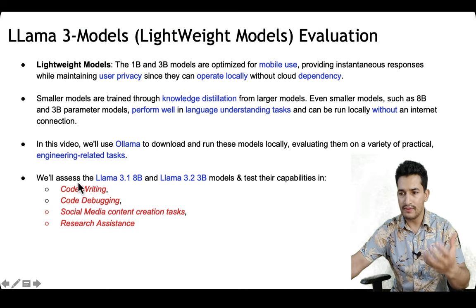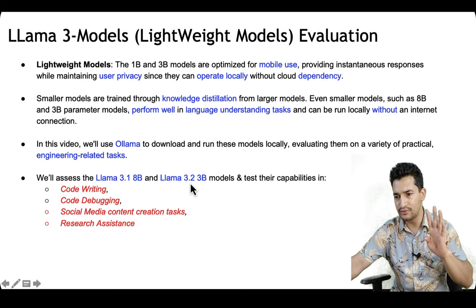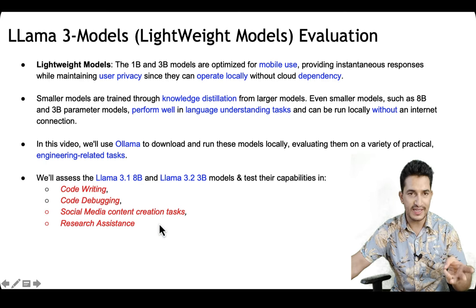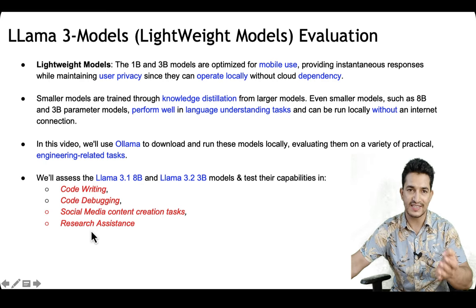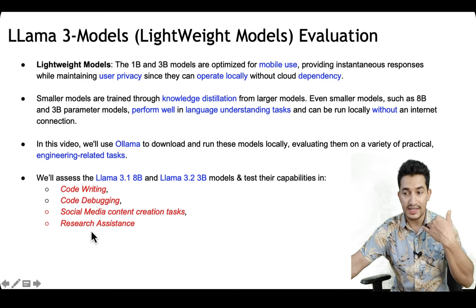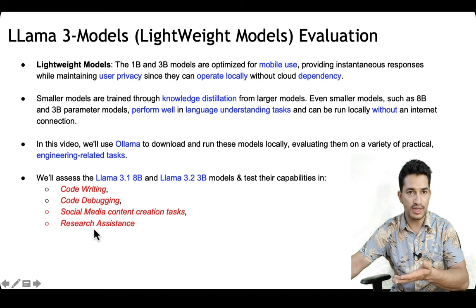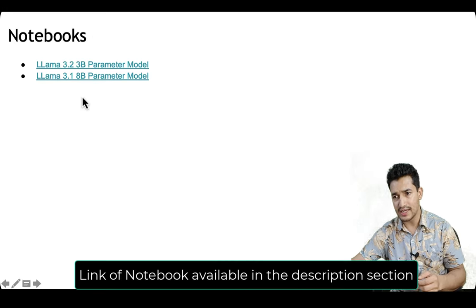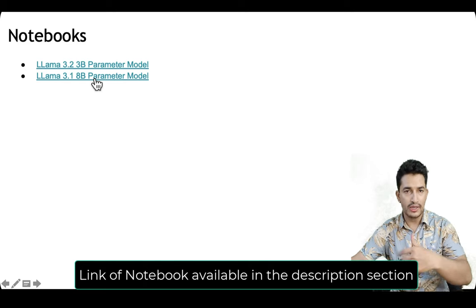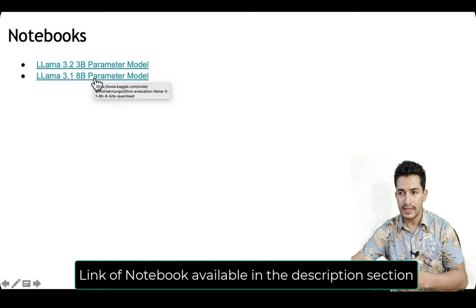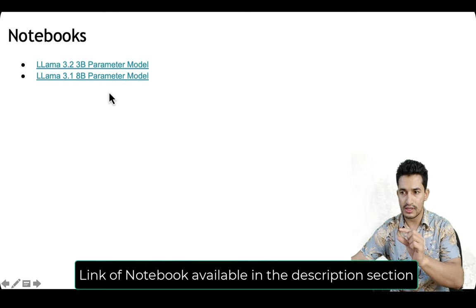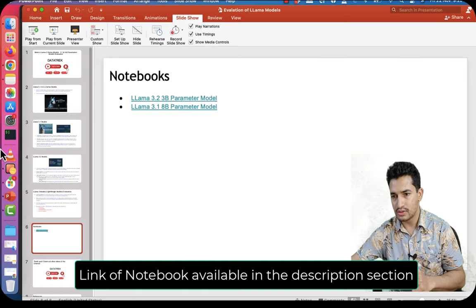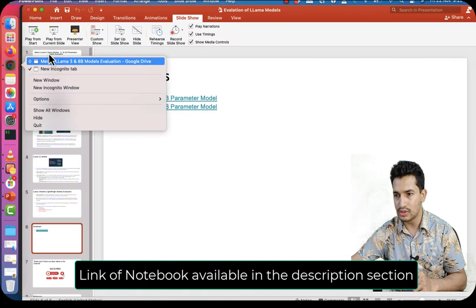We will use Ollama, a utility tool with which you can download Llama series models or any open source models and run them on your system. We will use this Ollama utility to run those models locally and evaluate them on various engineering-related tasks across four categories: code writing, code debugging, social media content creation, and research assistance.